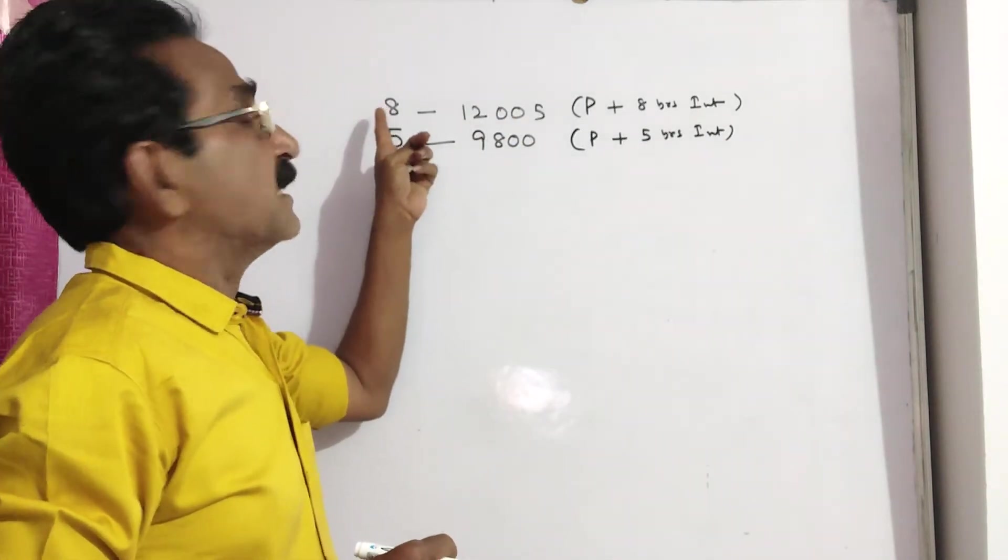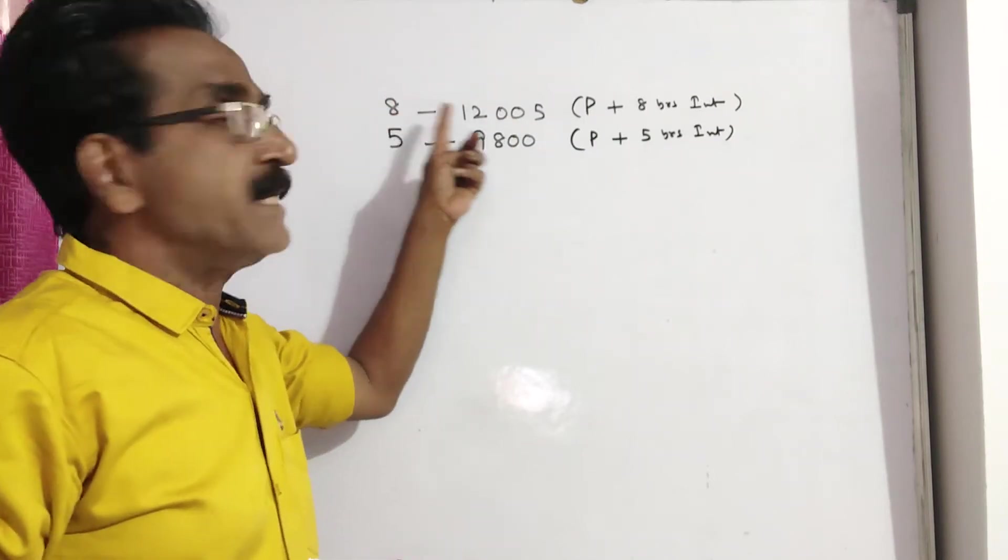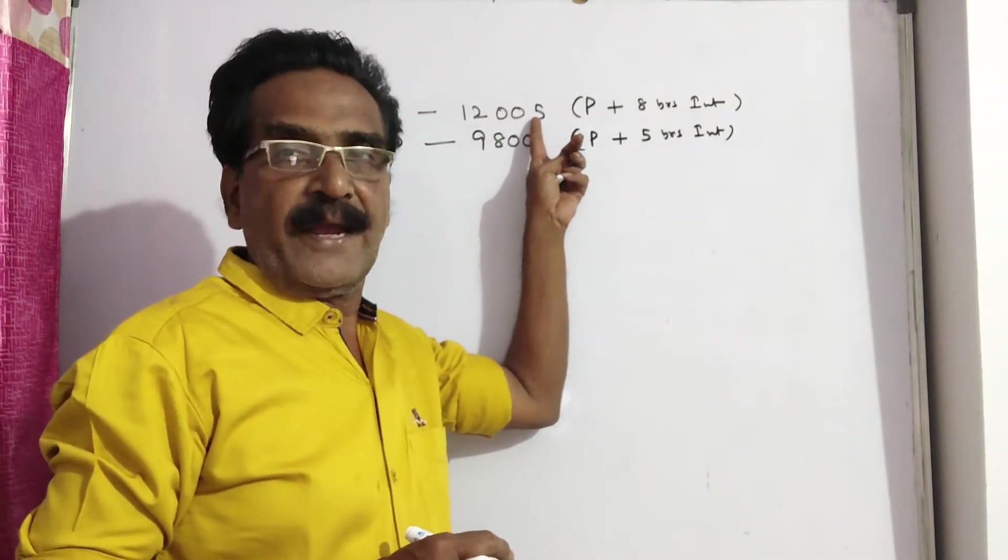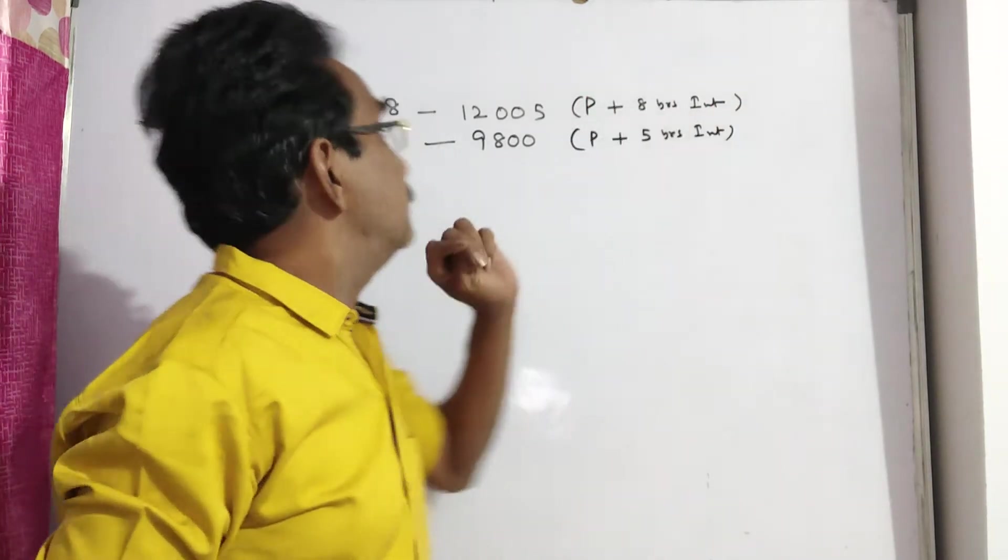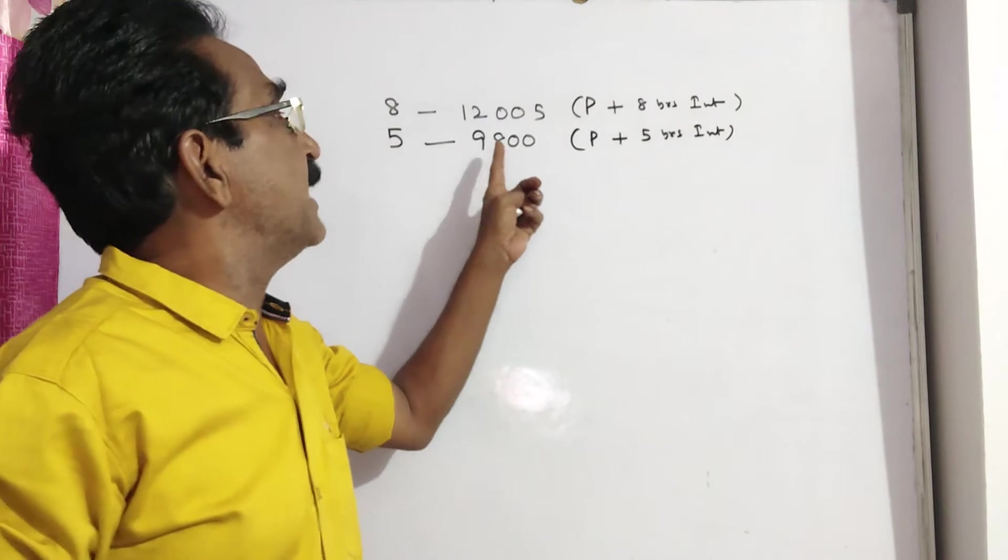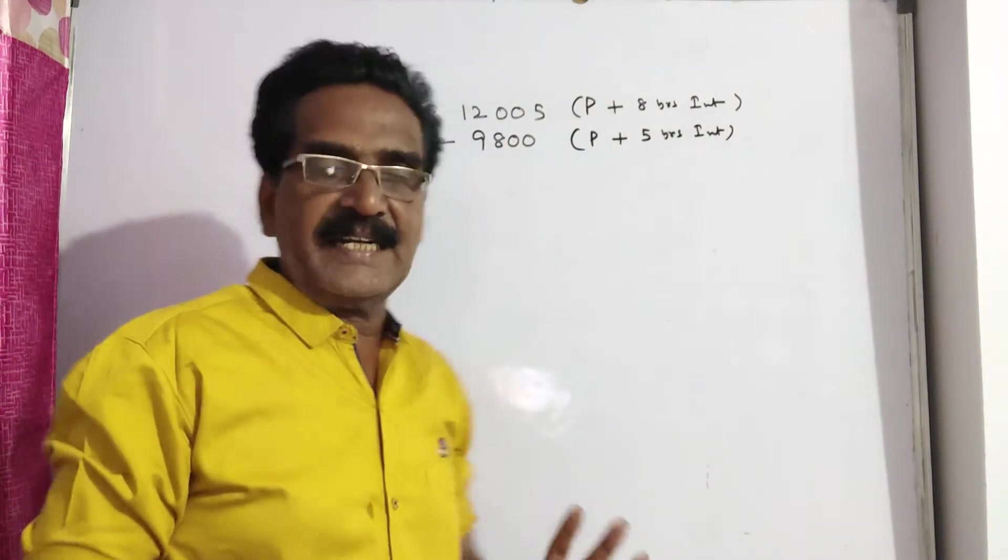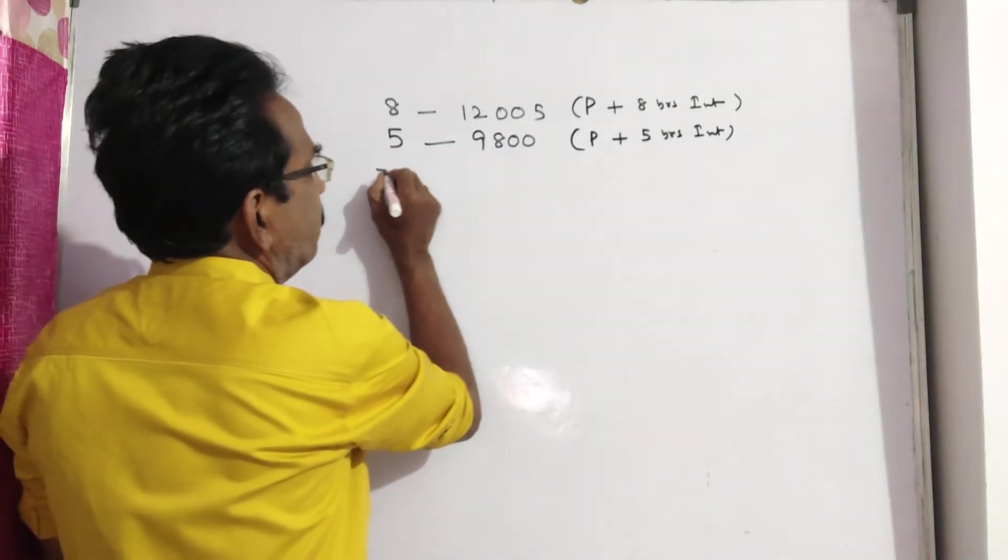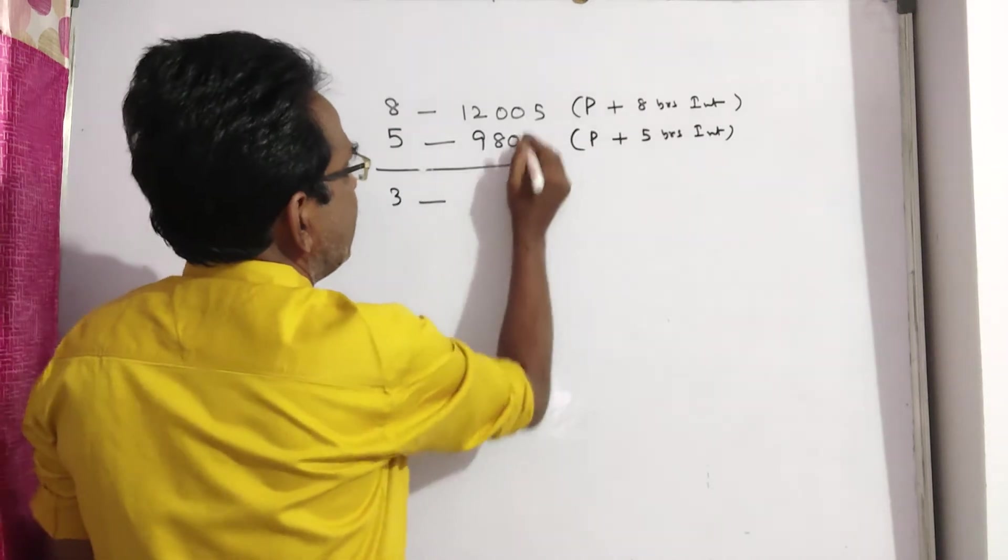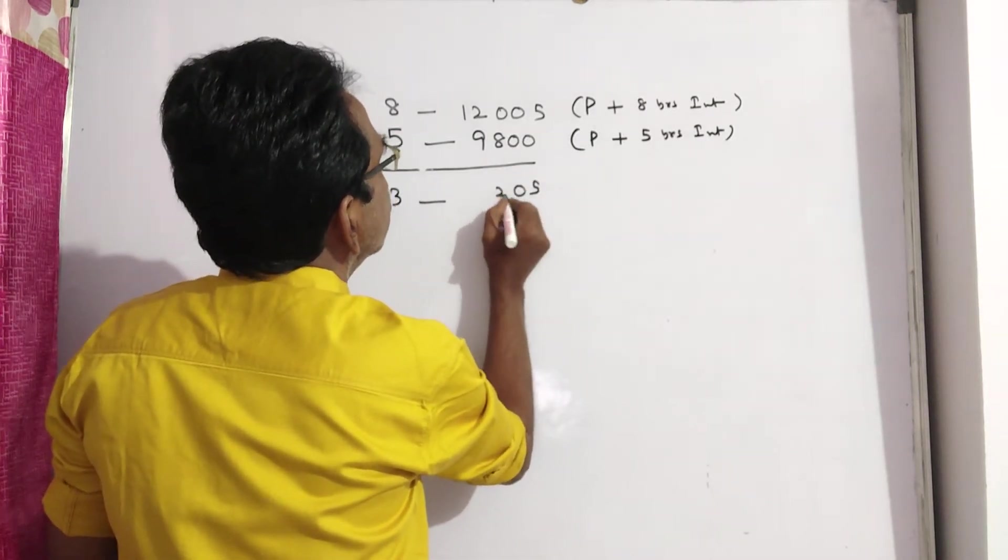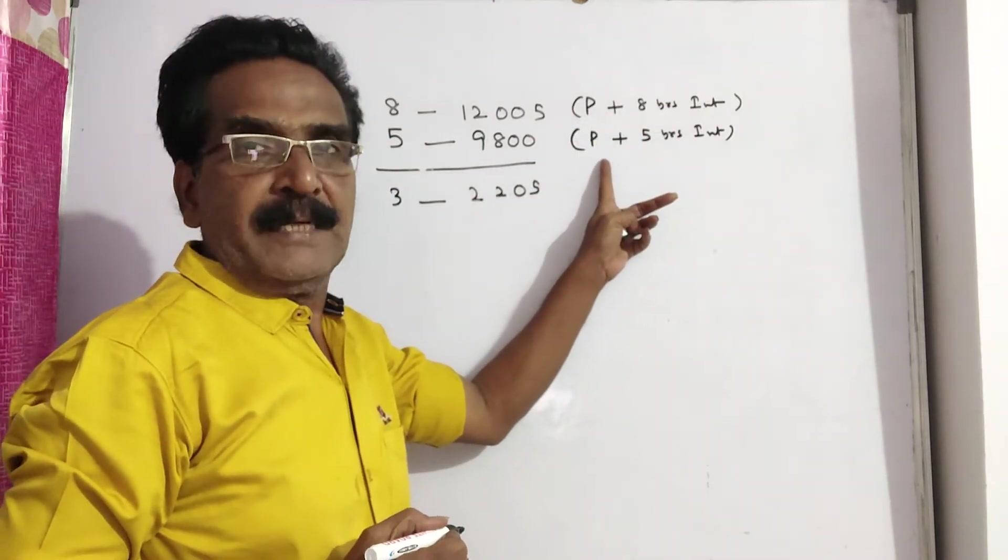See friends, this 12,005 in 8 years includes principal plus 8 years interest. In the same way, this 9800 includes principal plus 5 years interest. Now on subtracting, we get interest for 3 years. Interest for P is the same in both cases.